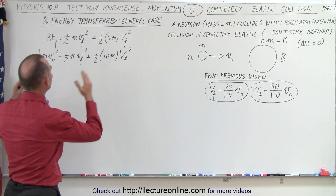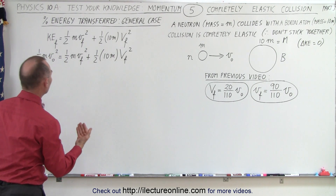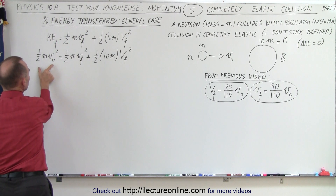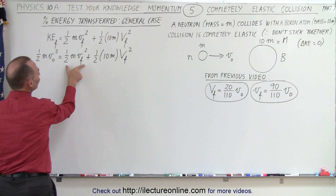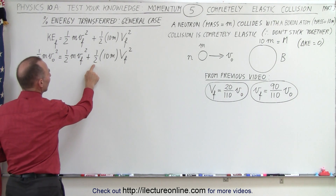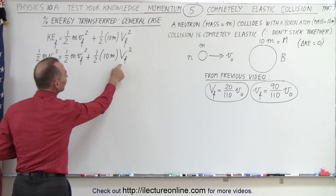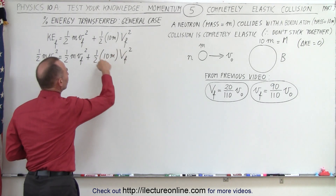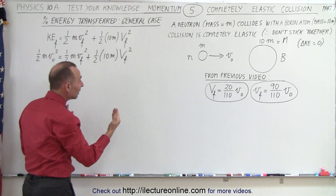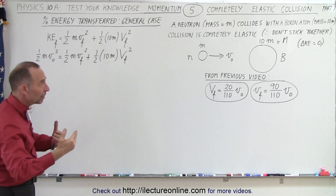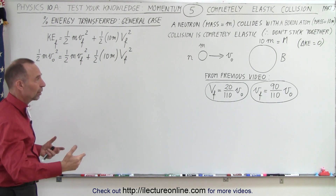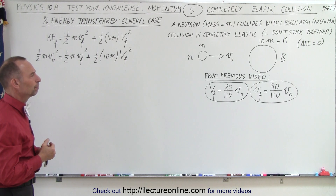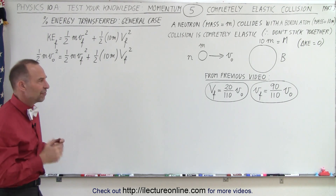The amount of energy transferred can be calculated as follows. The original energy, which is 1/2 m v_initial² of the neutron, equals 1/2 m v_final² of the neutron plus 1/2 times 10m v_final² of the boron. The question is, what is the size of this relative to the original energy? And in the general case, depending upon the different masses, what if the masses were different — a different atom and maybe a different impact particle? Let's go ahead and figure that out.